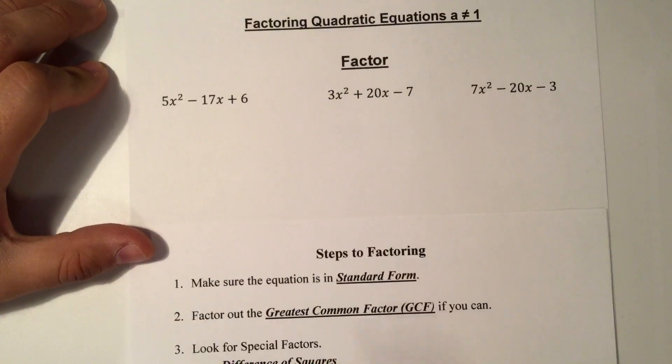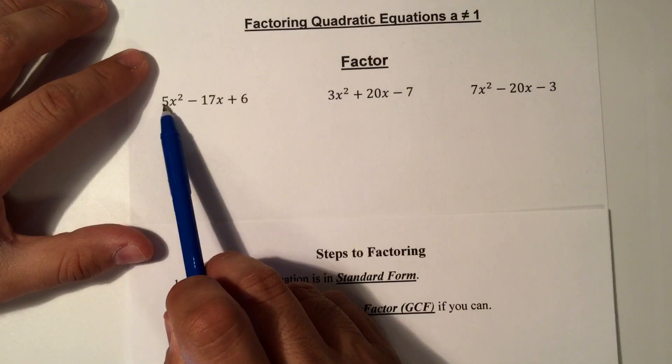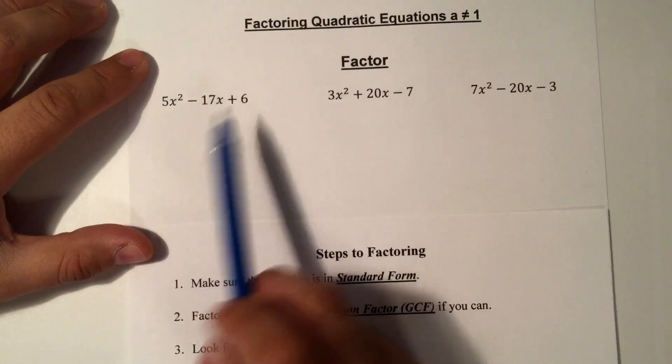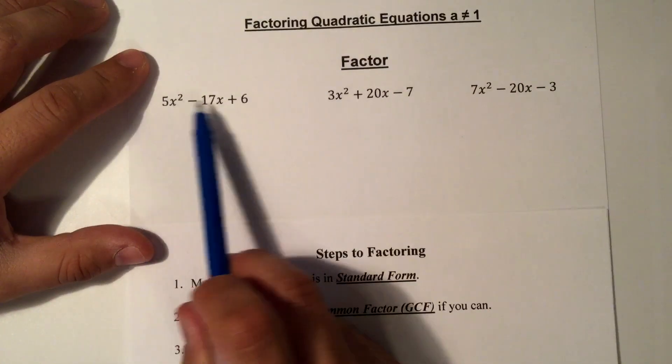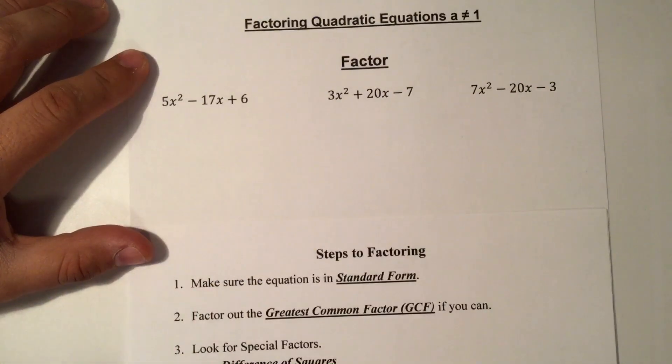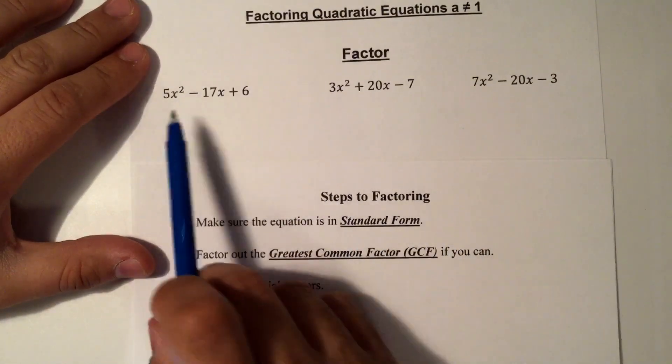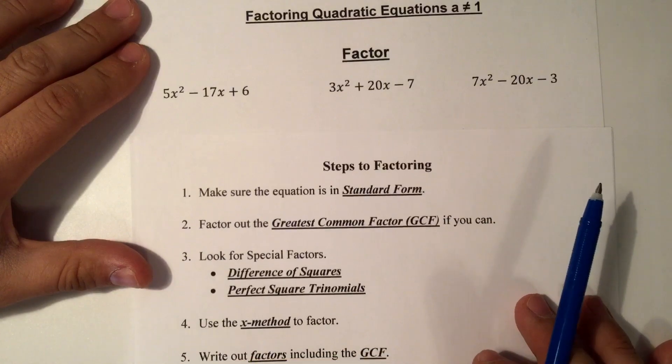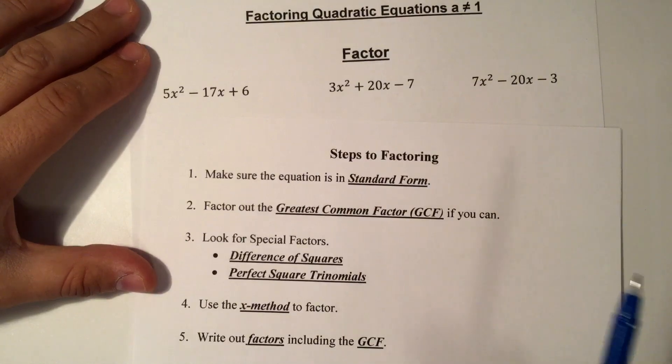Next, we're going to factor out the greatest common factor if you can. In terms of the coefficients and constants, 5, negative 17, and 6 have nothing in common. They're only divisible by 1. Now we take a look at the variables. The first term has an x, so does the second term, but the third term does not have an x. Next, we're going to look for special factors, but we'll go over that in the next notes. Then we're going to use the x method to factor, and then we're going to write the factors, including the GCF, if we find one.